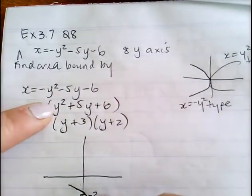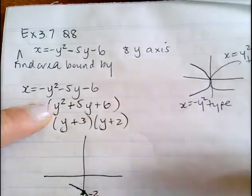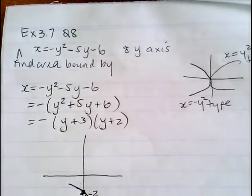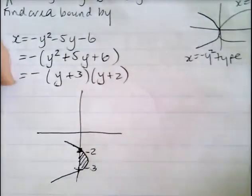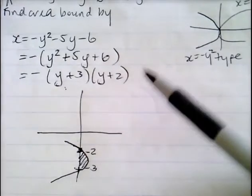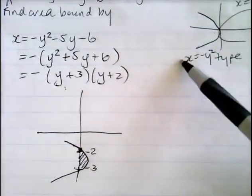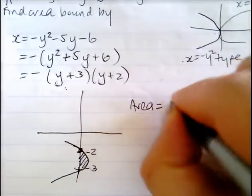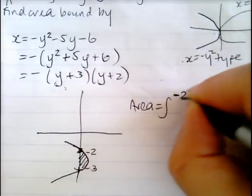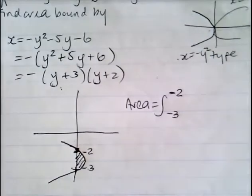You want the area bound by this curve and the y-axis, so the values to substitute are negative 3 and negative 2. You must put negative 2 on top of the integral because it's bigger than negative 3 — otherwise you'll get a negative answer.